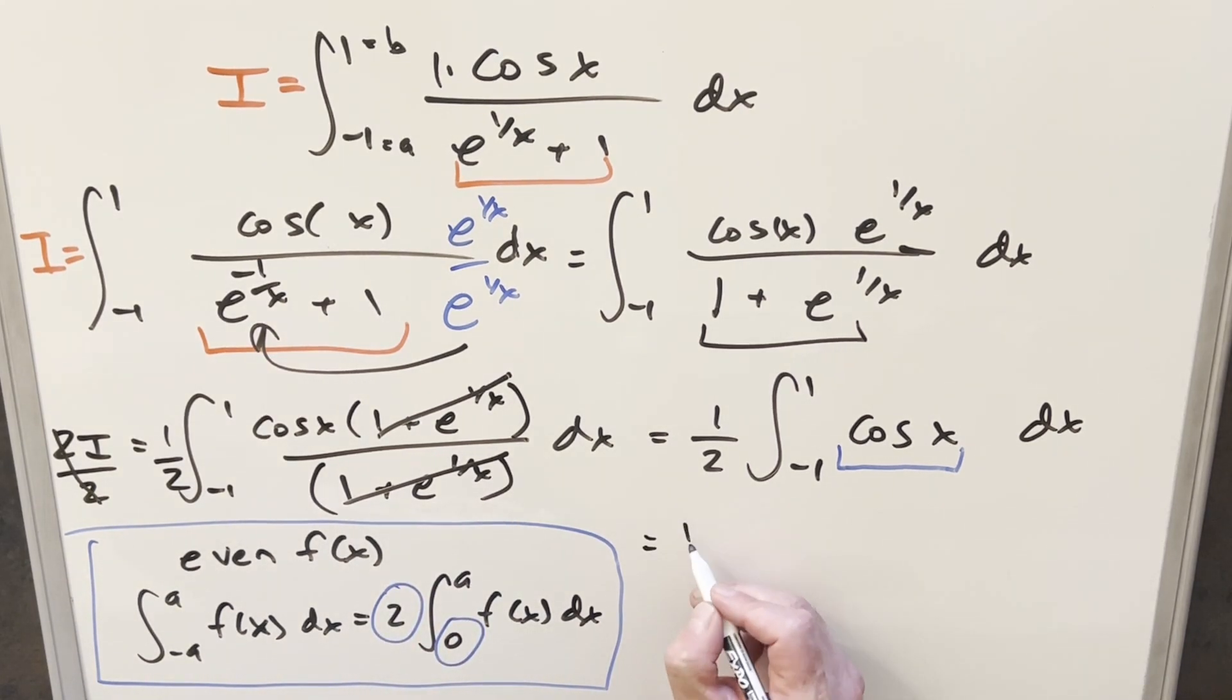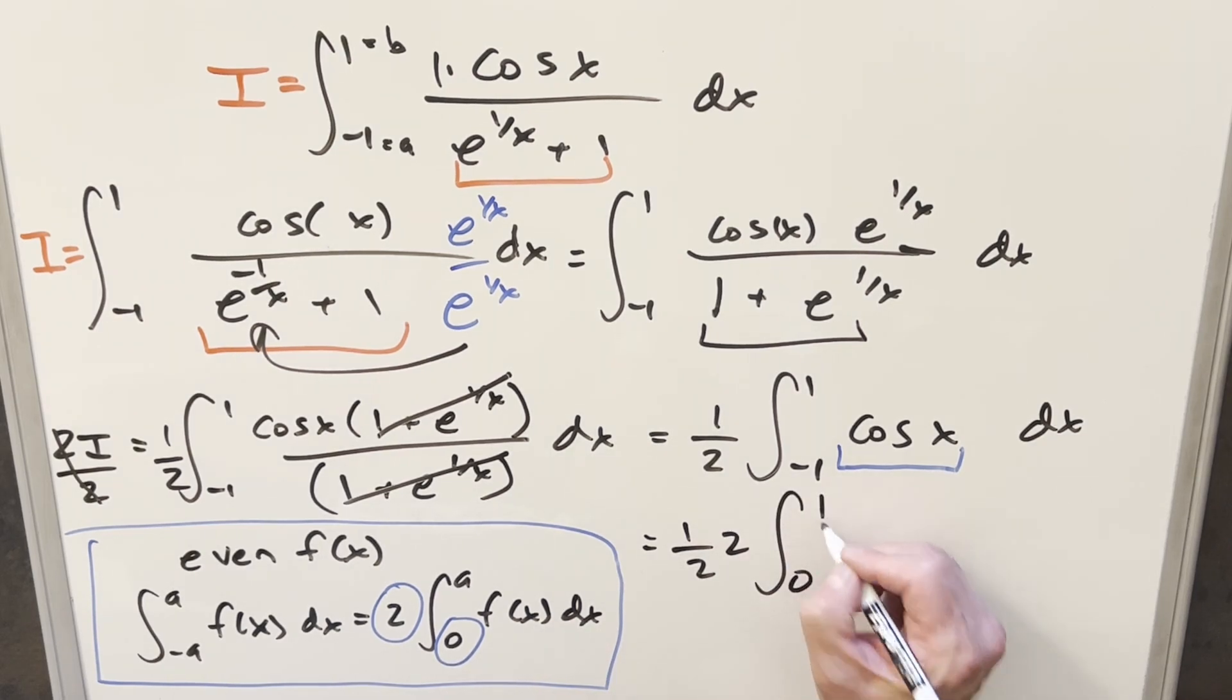So when we do that, we have our 1 half in front, we bring this 2 out, and now our integral is going from 0 to 1 of the same thing, cosine x dx. But then 2 times 1 half, that's just going to be 1, and so all we need to do now is just integrate cosine x.